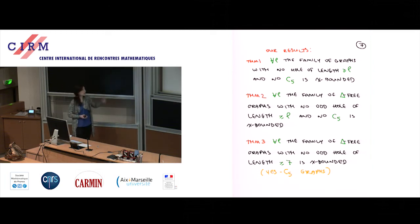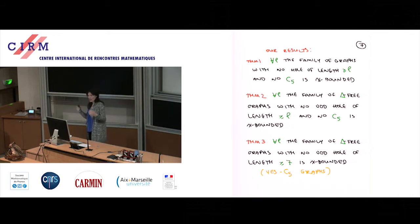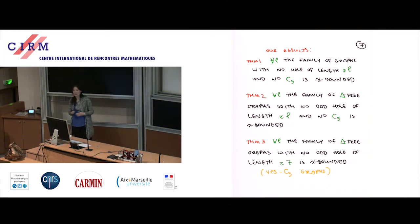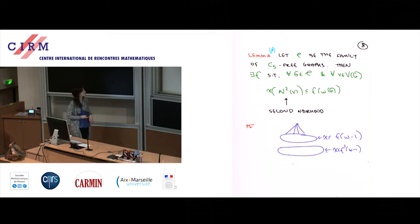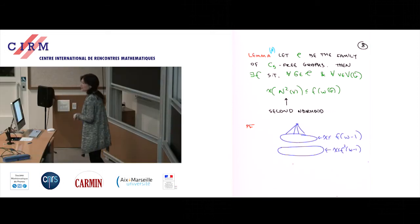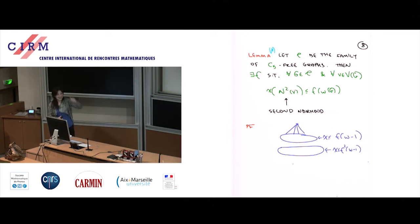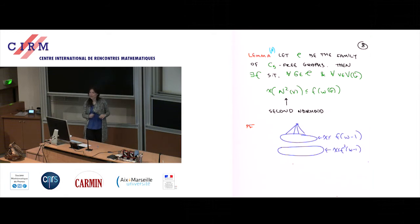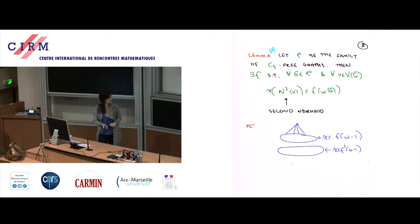All three theorems have similar proof elements. I'll show you these elements, then prove each theorem in turn. The first key lemma — I'll call it Lemma-star because it's not quite true as stated without an inductive assumption on omega — concerns second neighborhoods. Suppose I'm in the middle of proving a family is chi-bounded and I know graphs in this family are C5-free. I claim I can arrange that the second neighborhoods have bounded chromatic number.